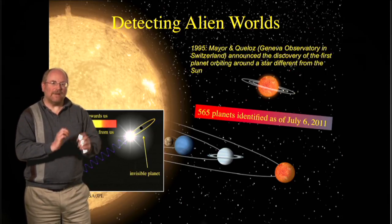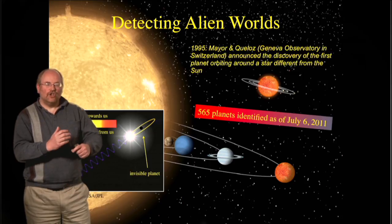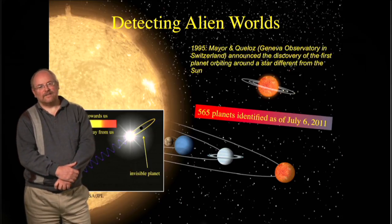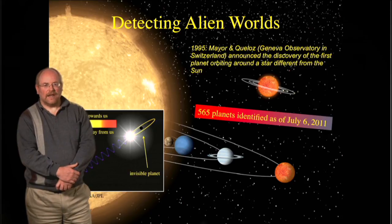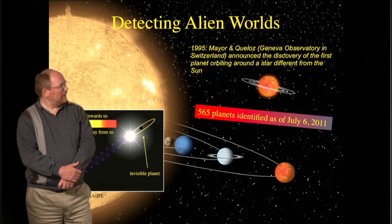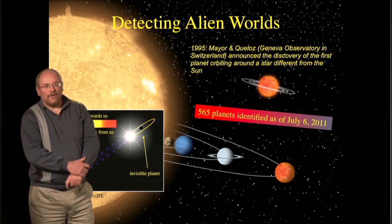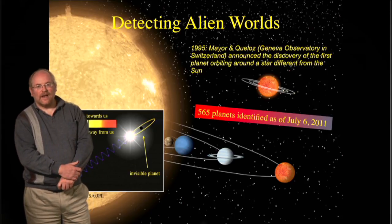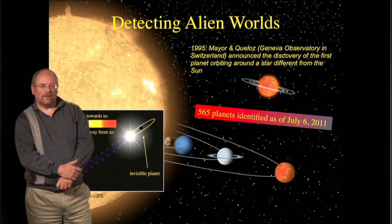Using spectrographs led into a new research area for astrophysics to search for these exosolar planets. In the meantime, over 500 planets have been identified as of July 2011, this year.